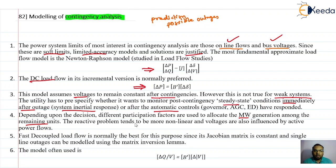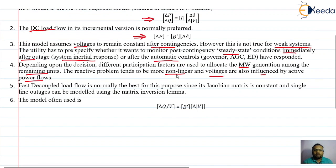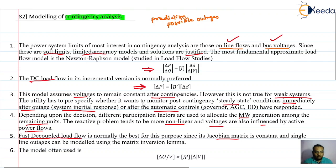Reactive problems tend to be more non-linear and voltages are also influenced by active power flow. From the decoupled load flow method, we can go further to the fast decoupled load flow method. The problem with the decoupled method is inverting the Jacobian at every iteration; in the fast decoupled method, using the matrix inversion lemma, the Jacobian is made constant. This fast decoupled load flow model can also be utilized for contingency analysis, and the modeling choice depends on what parameters and conditions the utility wants to monitor.